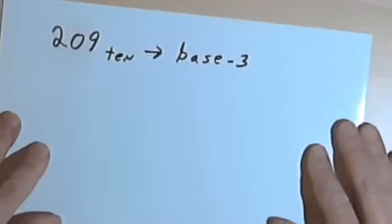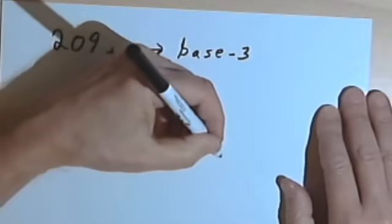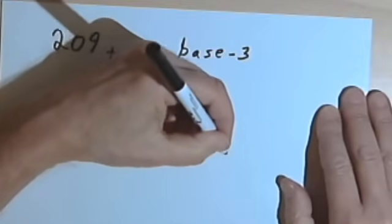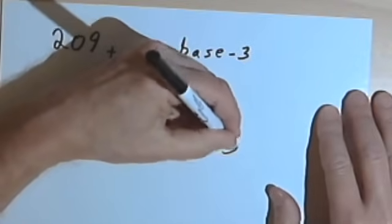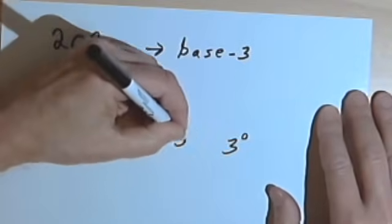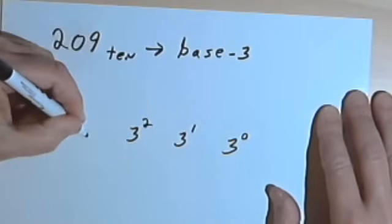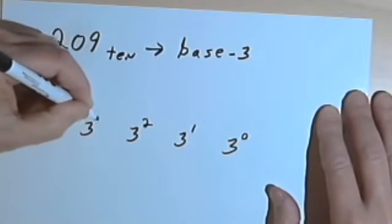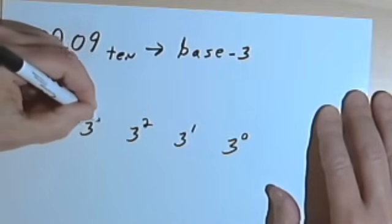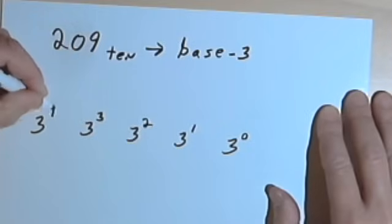Here's 209 base 10. I want to turn that into base 3. So I'm going to start out writing powers of 3: 3 to the 0, 3 to the 1st, 3 squared, 3 to the 3rd — and I'll probably need 3 to the 4th as well.